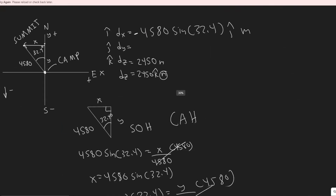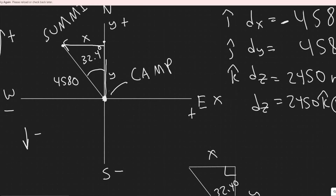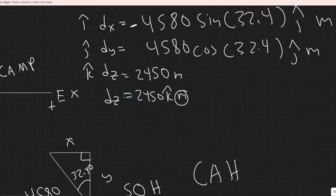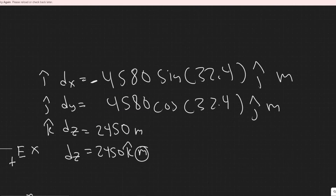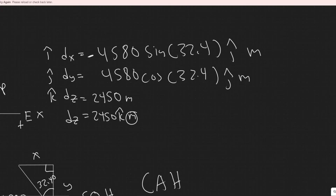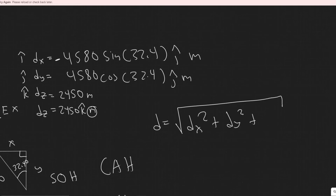For the y component, the value is 4,580 cosine of 32.4. Since we're in the y direction, we use j-hat. The direction is northward, which is positive y, so we leave it positive: 4,580 cosine of 32.4 meters j-hat. So we now have all three components. To find the magnitude, take the square root of all components squared and added together: the square root of dx² plus dy² plus dz².